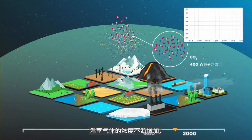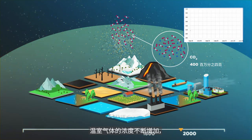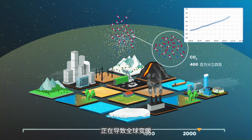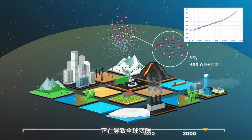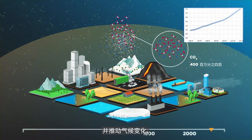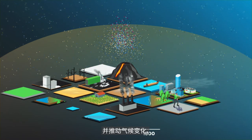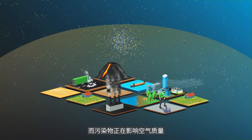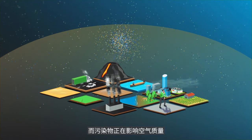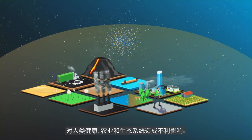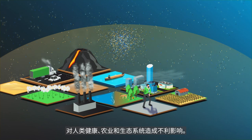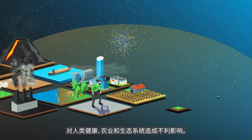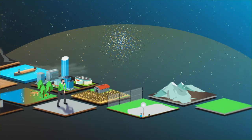Increasing concentrations of greenhouse gases such as carbon dioxide are contributing to global warming and driving climate change, while pollutants are affecting air quality with detrimental impacts on human health, agriculture and ecosystems.